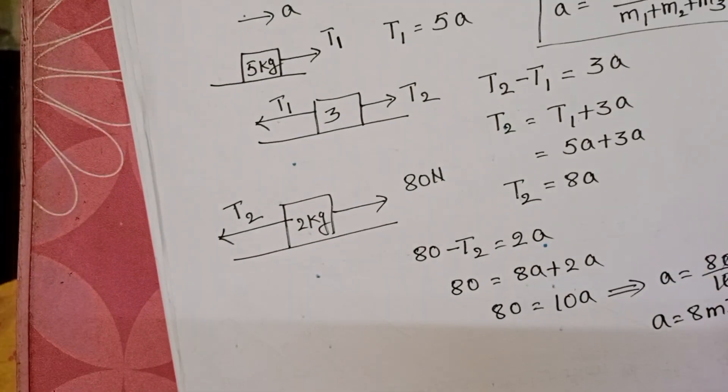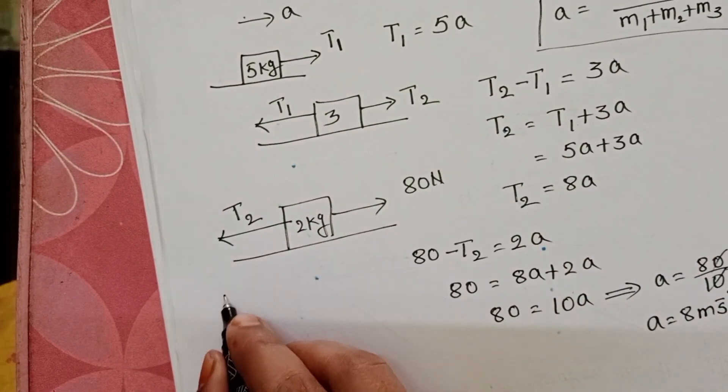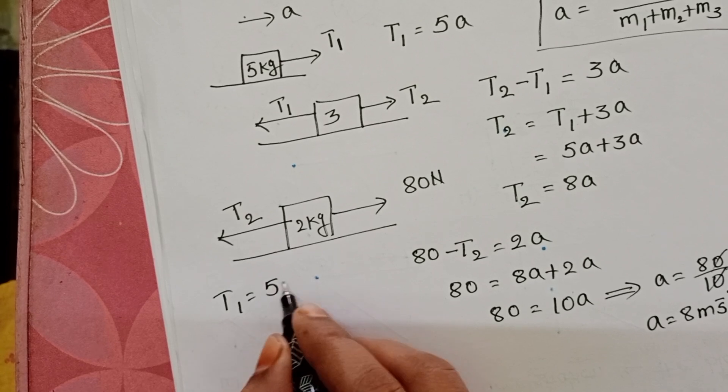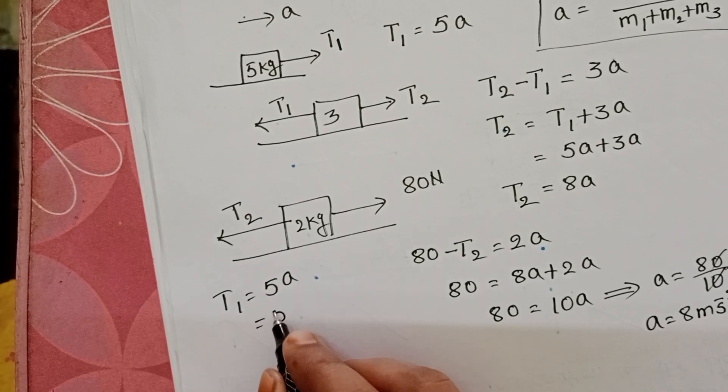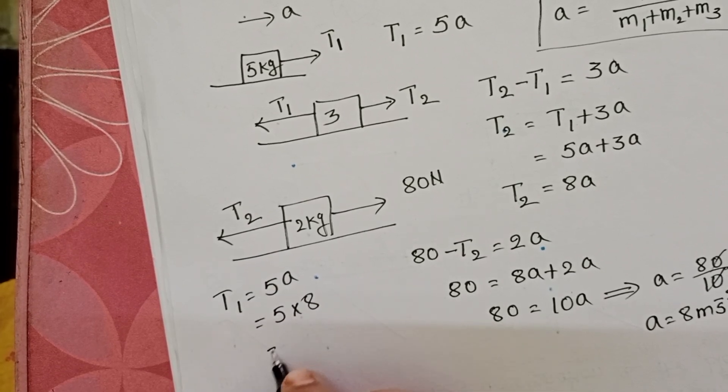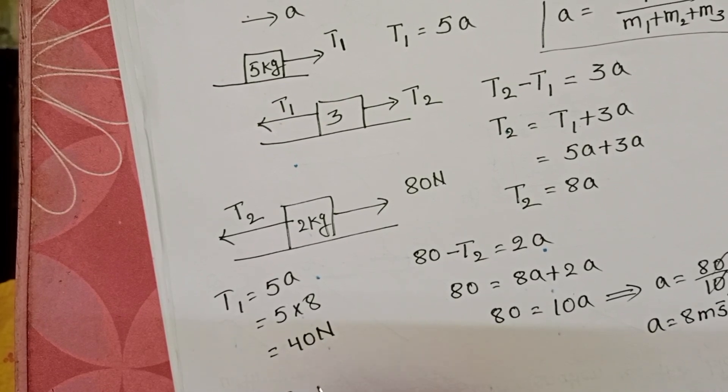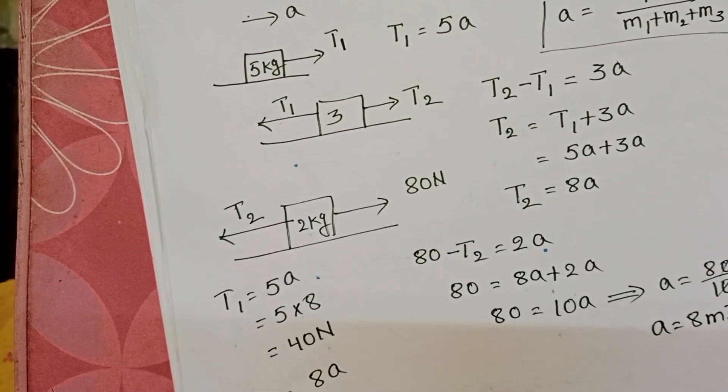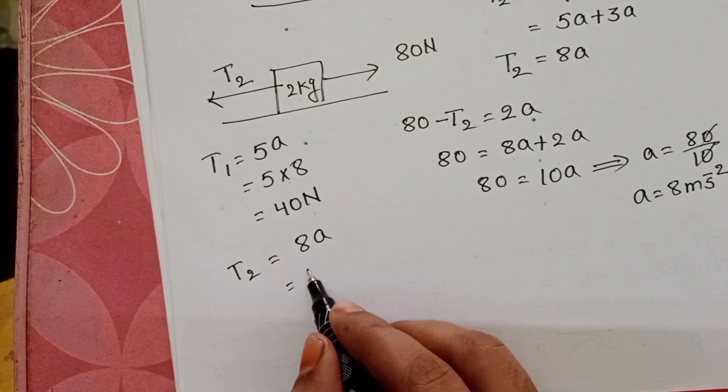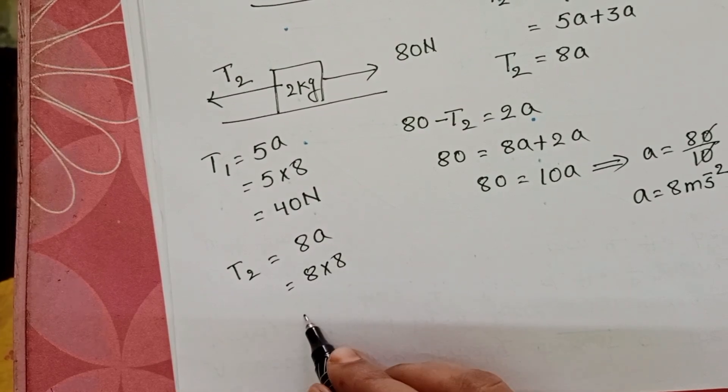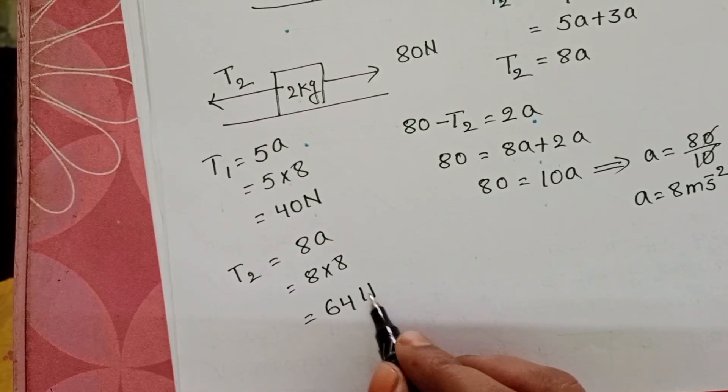But here we have to find out the tensional forces also. T1 equals 5A. Substitute acceleration: 5 into 8 equals 40 newton. And T2 equals 8A: 8 into 8 equals 64 newton.